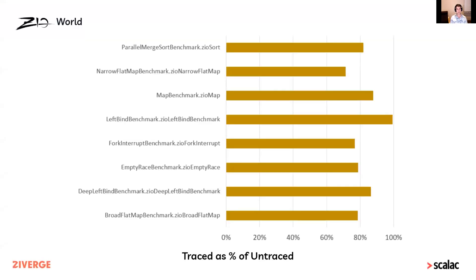The other thing I mentioned was the slowdown. These are all of the benchmarks that currently exist which have a traced and untraced variety, showing the performance of the traced benchmark versus the untraced benchmark. As you can see, there's still a cost, but it's a big improvement on what we had before. I only got this working about 24 hours ago, so this is with no real optimizations — these numbers will improve, hopefully quite a bit. With the improvements that John's made to the runtime system, I think you'll probably find that running tracing on a ZIO 2.x application is faster than untraced on ZIO 1.